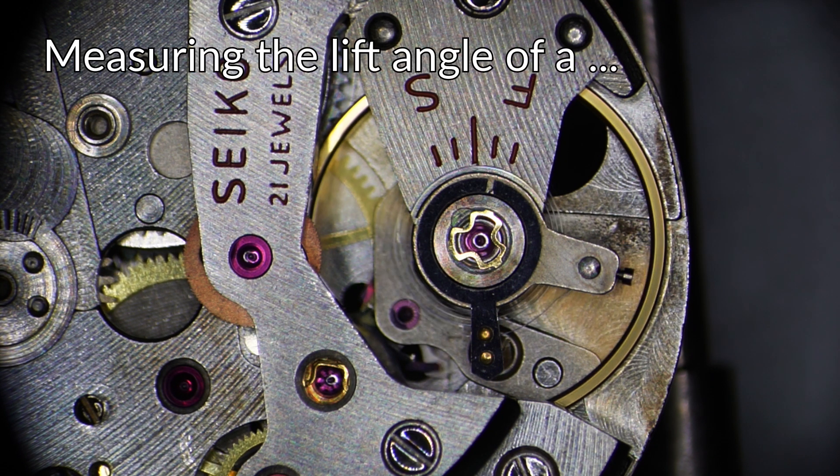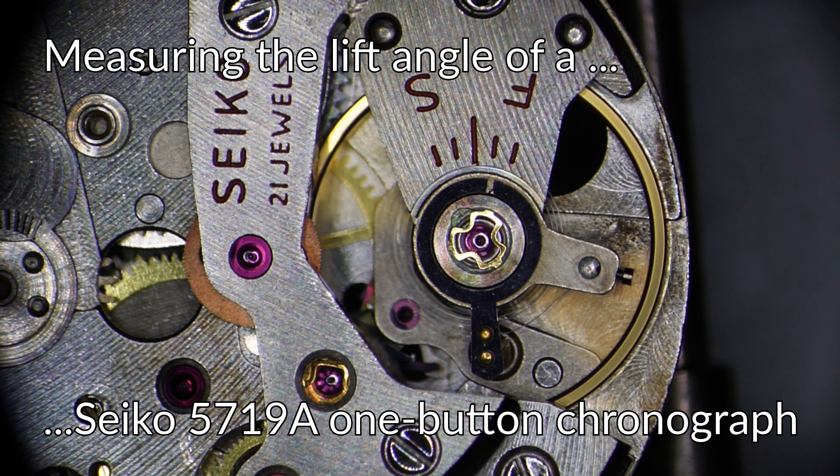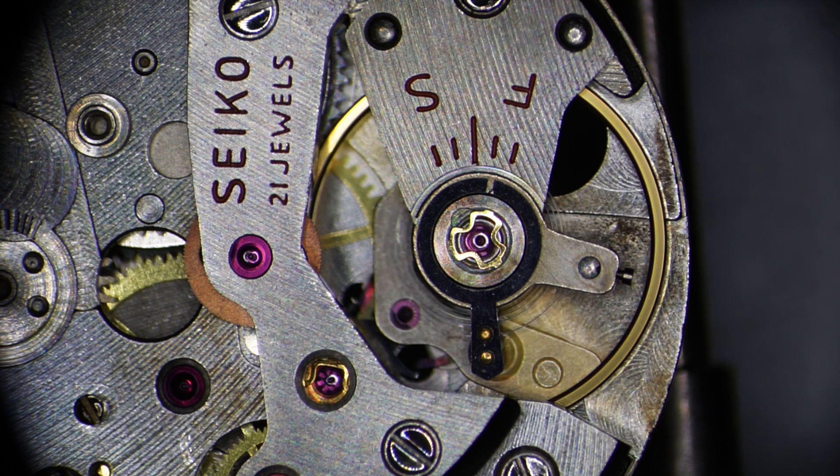In this video we're going to be measuring the lift angle of a Seiko 5719A one-button chronograph movement from 1964.